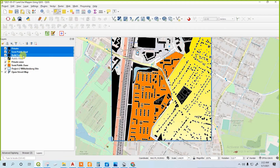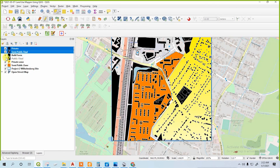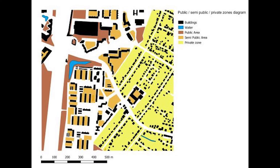Now delete the unnecessary build form layers since we already merged them into the build form layer. The final output will be like this. Thank you everyone for watching the video. I think you now have an idea of how to do land use mapping in QGIS.